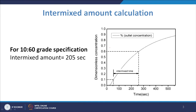This process is expected to give you the maximum amount of intermixed grade steel, but you can certainly reduce it by altering the flow field or by controlling other parameters like residual volume or flow rate. This is how the intermixed amount is calculated. We have talked about getting the RTD curve by solving the continuity equation and the Navier-Stokes equation, then solving the concentration equation in a transient manner.